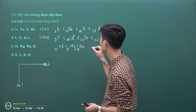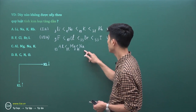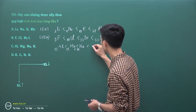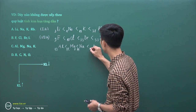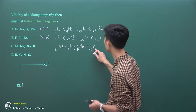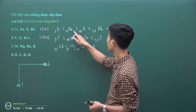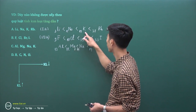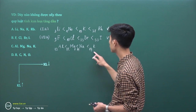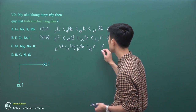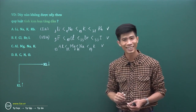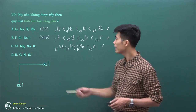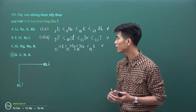Tính kim loại tăng dần từ Nhôm đến Magie đến Natri. Còn Natri so sánh với Kali thì Kali Z=19, hai nguyên tố này cùng nhóm 1A, tính kim loại của Natri nhỏ hơn tính kim loại của Kali. Do đó dãy C cũng là dãy sắp xếp theo chiều tính kim loại tăng dần.